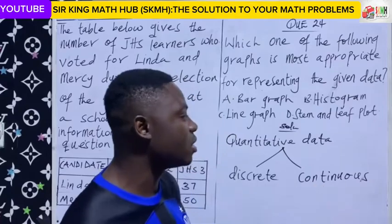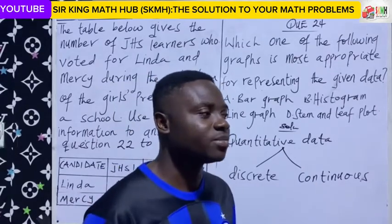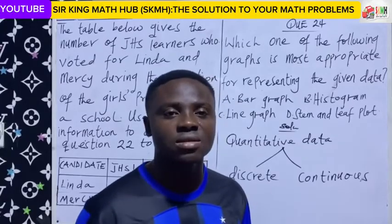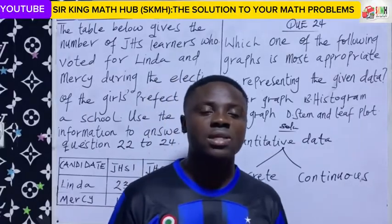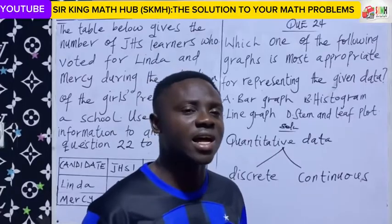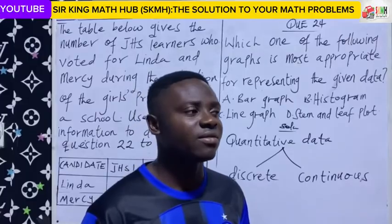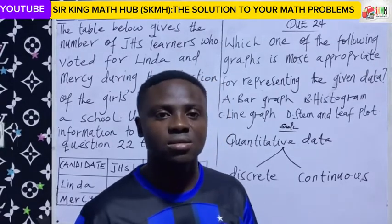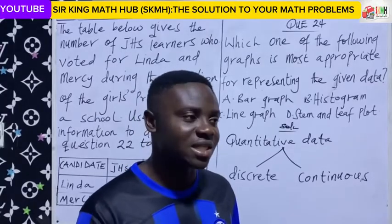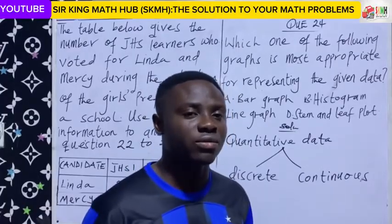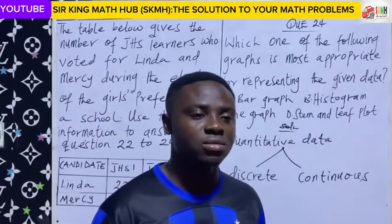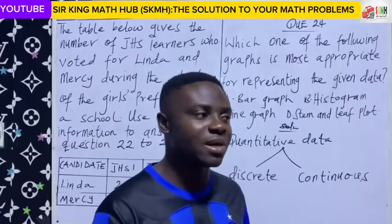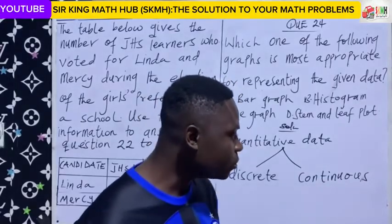On the other hand, continuous data — we are talking about data that can be represented using counting numbers, fractions, that is common fractions, decimals, sometimes even negative numbers. For example, the height of students in the classroom. You can have, let's say, 160 centimeters. You can have 160.5 centimeters — it is possible. You can have 1.6 meters. You can see that there are decimals. Because it can assume decimals, this is continuous data. You can also talk of the mass of students in the classroom. You can have 30 kilograms, or 30.2 kilograms, or 30.5 kilograms. Because we are having decimals in them, it is classified under continuous data.